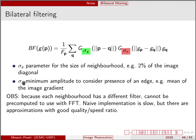So sigma s and sigma r are parameters for the size of the neighborhood. Usually 2% of the image diagonal is used in this case. And the sigma r is the minimum amplitude to consider presence of an edge. That means, usually the mean of the image gradient. Why is that? This controls the minimum amplitude so that we can consider some pixel to be filtered or to be considered in the filter.